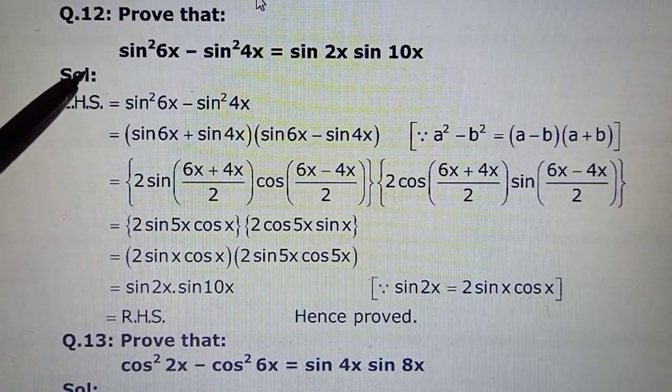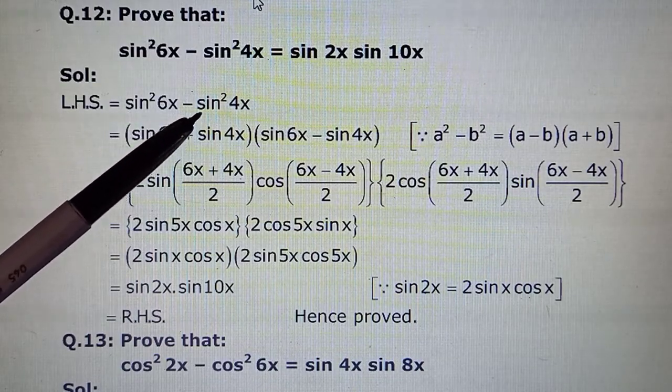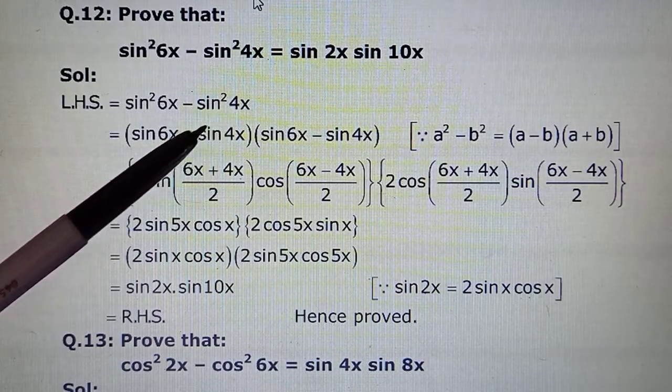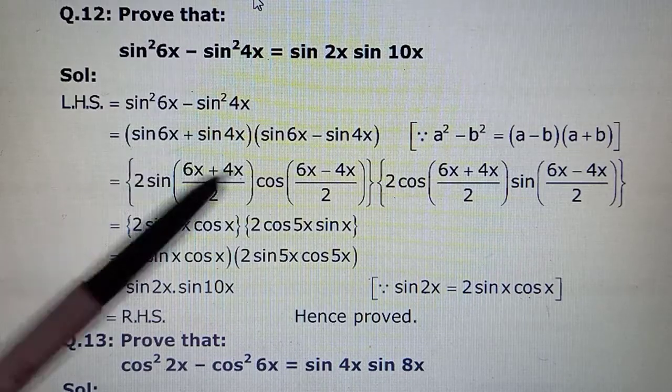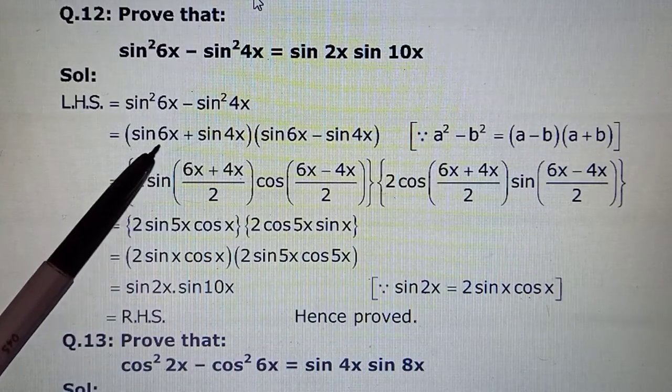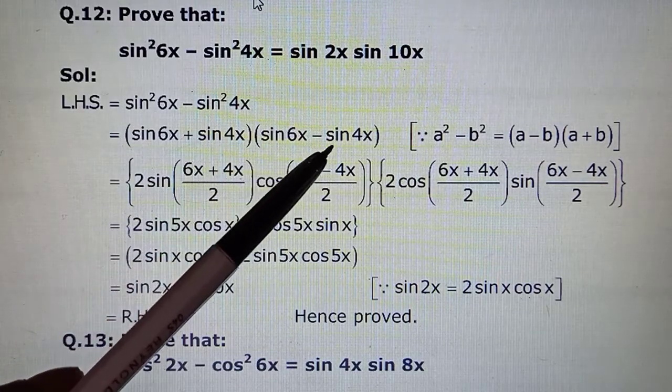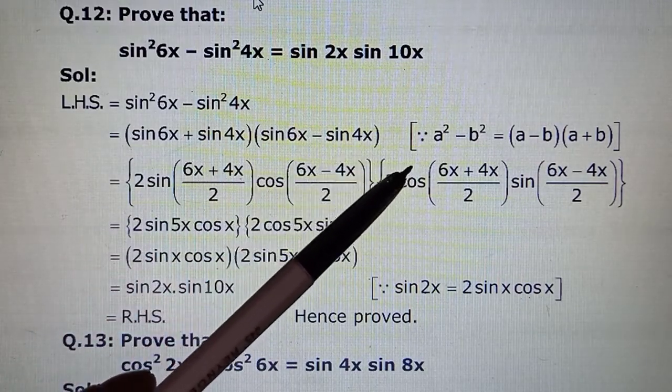The 12th one also is not a difficulty. We start with our left hand side which was sin²6x - sin²4x. First we are applying our algebraic identity A² - B² factors as (A-B)(A+B). So sin 6x + sin 4x, sin 6x - sin 4x by this identity.